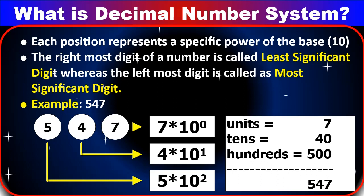The rightmost digit of a number is called the least significant digit, whereas the leftmost digit is called the most significant digit. For example, in 547: 7 is the least significant digit and 5 is the most significant digit. So 7 × 10⁰ = 7, 4 × 10¹ = 40, 5 × 10² = 500, giving units = 7, tens = 40, hundreds = 500, that is 547.